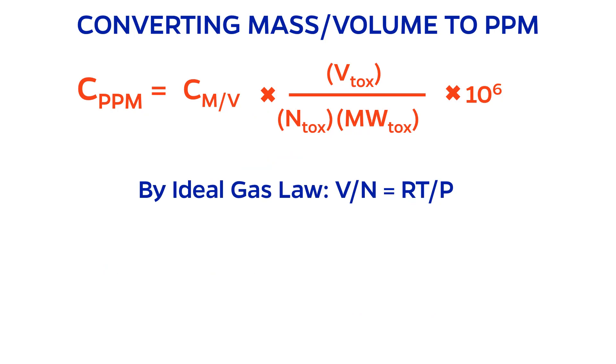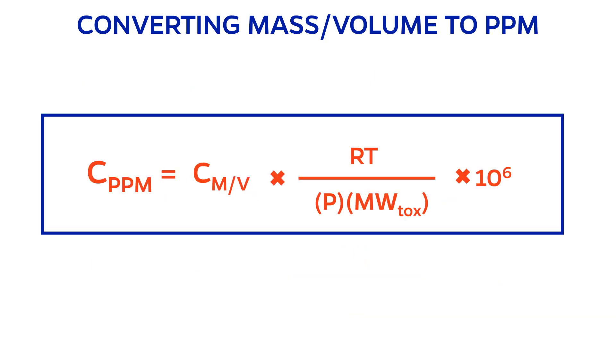The final step is using the ideal gas law again to substitute volume over moles, which can be replaced by RT over P. So there you have it. Here is your formula that relates the concentration in mass per volume units to parts per million.